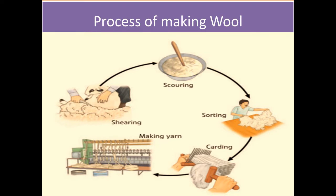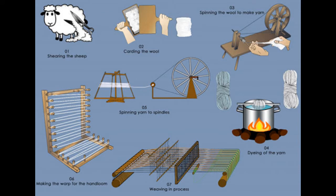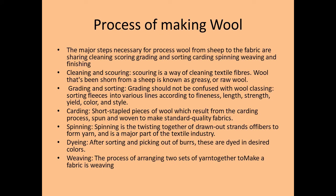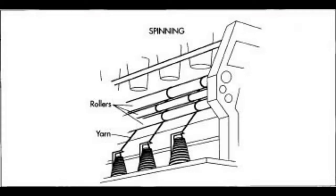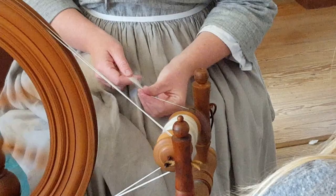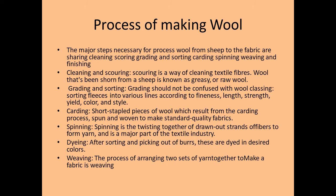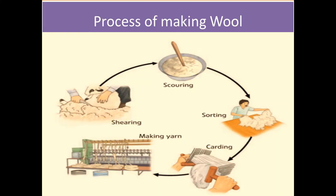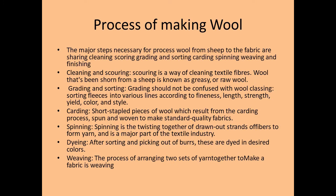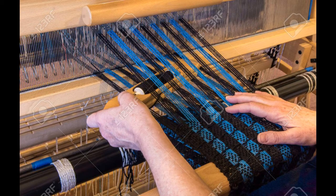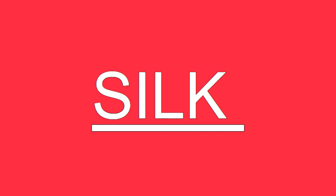The third process is carding. Short stapled pieces of wool resulting from carding are spun and woven to make standard quality fabric. Then comes spinning — the twisting together of drawn-out strands of fibers to form yarn, which is a major part of the textile industry. This yarn is then dyed in different colors to give attractive colors to the fabric, and then sent for weaving. The process of arranging two sets of yarn together to make fabric is called weaving.